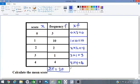And then we add up the xf column. So we could call that sigma xf. So 0 plus 10 is 10 plus 4 is 14 plus 3 is 17 plus 16 is 33.